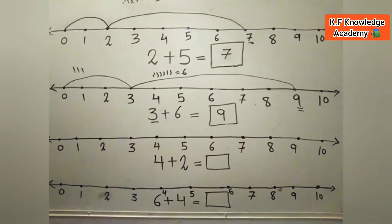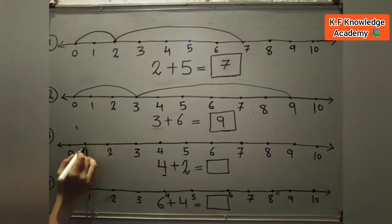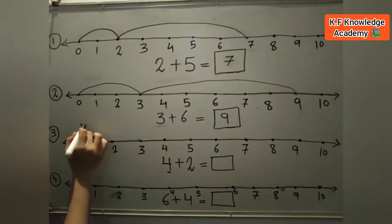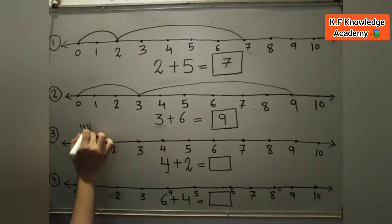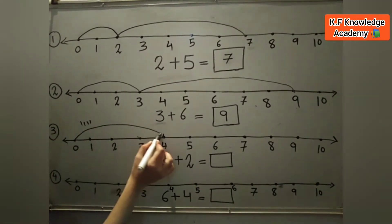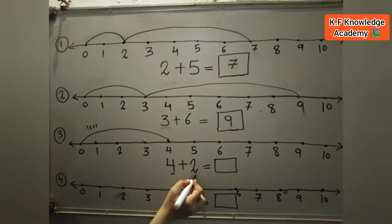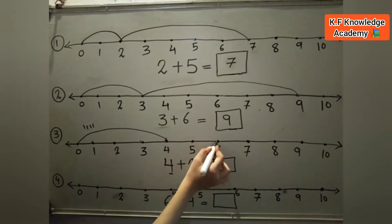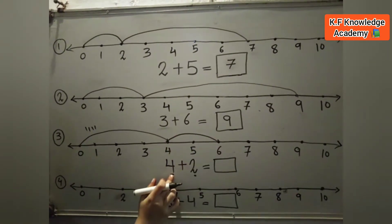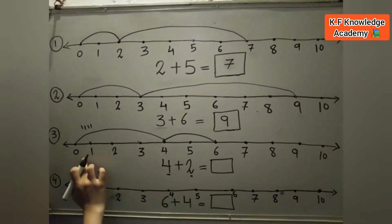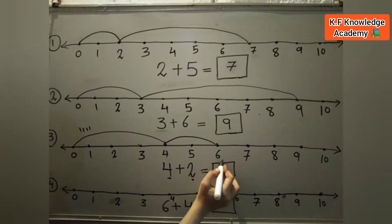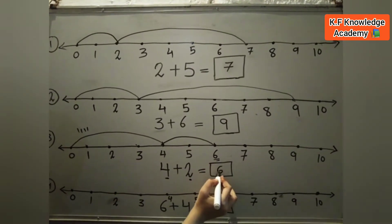Now 4 plus 2 is equal to. We go from 0 to 4 on the number line. After 4, we will add 2 numbers: 4 to 5 is 1, and 5 to 6 is 2. So 4 plus 2 is equal to 6. We make a half circle here and write 6 in the box.